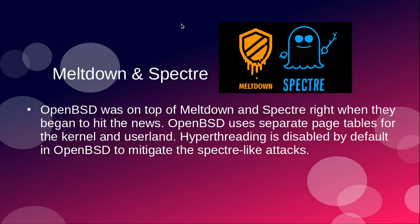Meltdown and Spectre. OpenBSD was on top of Meltdown and Spectre right when they began to hit the news. OpenBSD uses separate page tables for the kernel and user land. Hyperthreading is disabled by default in OpenBSD to mitigate Spectre-like attacks. Notably, OpenBSD was left out of the whole disclosure process with Intel — Intel decided to work with all the other operating systems except OpenBSD. Theo de Raadt cleverly deduced what was going on by turning things off in the kernel and caught the bug. They were accused of breaking embargo, yet they weren't even part of the process in the first place.